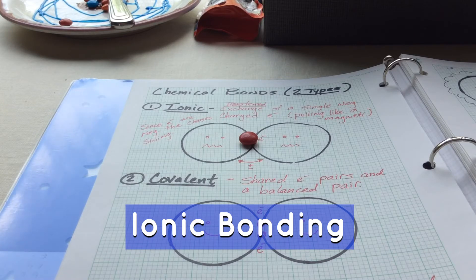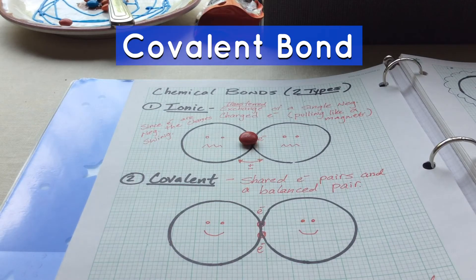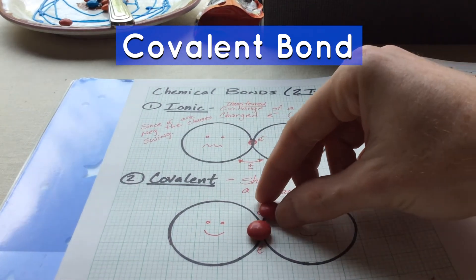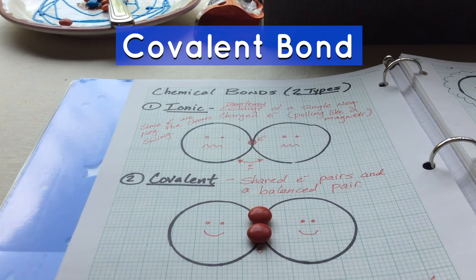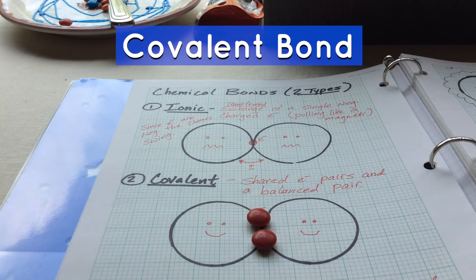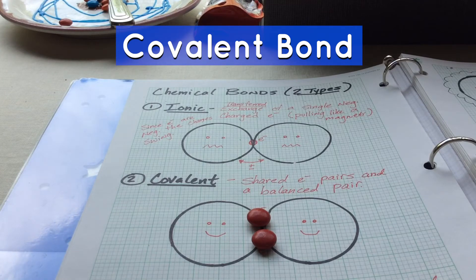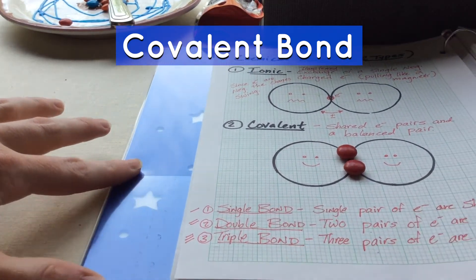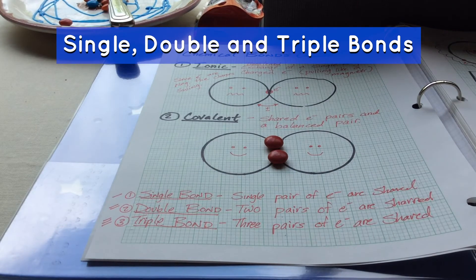It's like trying to share a toy but fighting over it at the same time. The next is the covalent bond, where you're sharing two electrons truly equally. When you share those two together, that balances out the two negative charges, creating a balanced, happy sharing of electrons — a covalent bond. There are three types of covalent bonds: single, double, and triple.